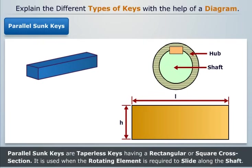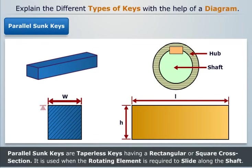Parallel sunk keys are taperless keys having a rectangular or square cross section. It is used when the rotating element is required to slide along the shaft.